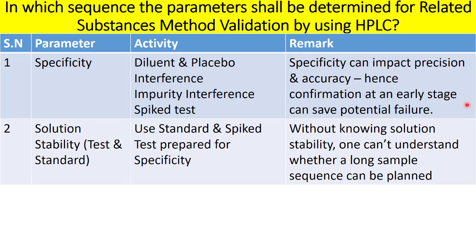I propose to perform solution stability as the second parameter. Solution stability can be determined for the standard and the spiked test solution. You can use the standard and spiked test solution used during the specificity study — no need to make fresh solutions. Without knowing the solution stability, you cannot understand whether a long sample sequence can be planned. Validation is not a small activity; you need to know how long your standard and sample solutions remain stable to plan the study.